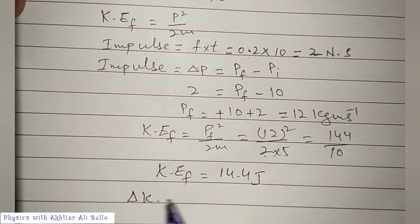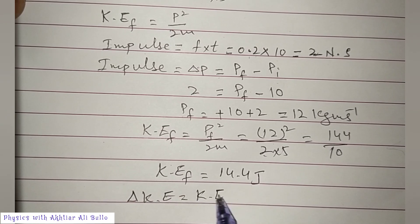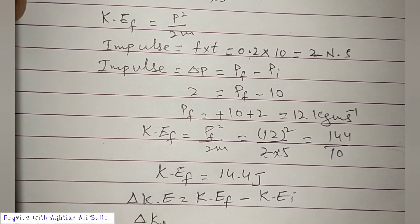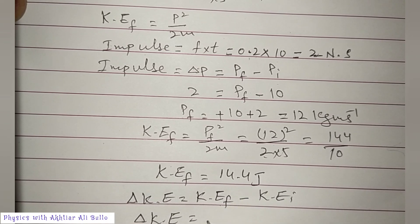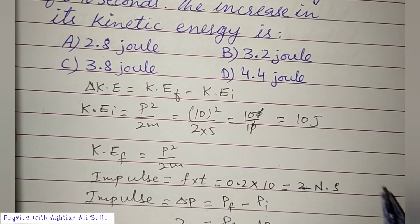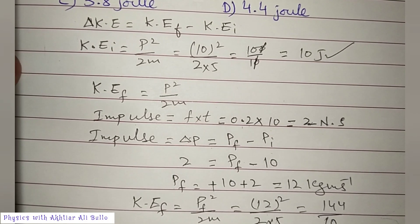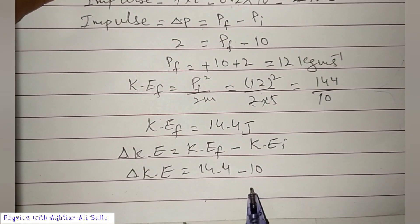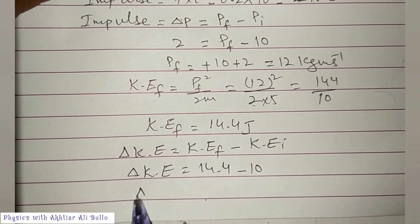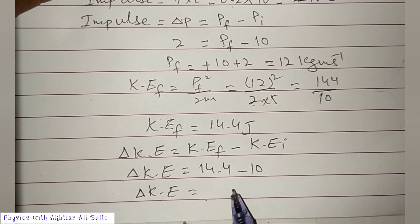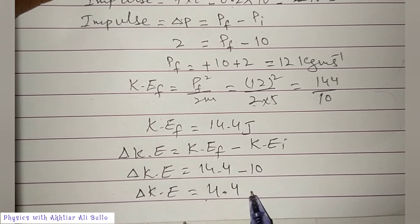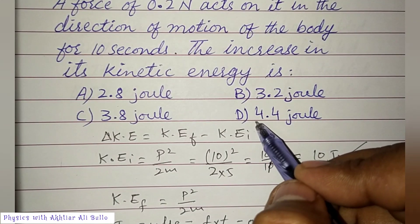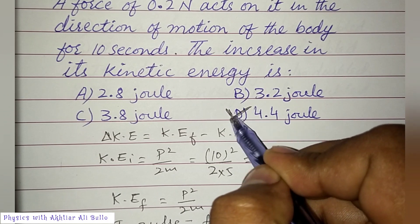Finally, change in KE equals final kinetic energy minus initial kinetic energy, which is 14.4 minus 10, giving us 4.4 Joules. This is our required answer, so the correct option is D: 4.4 Joules.